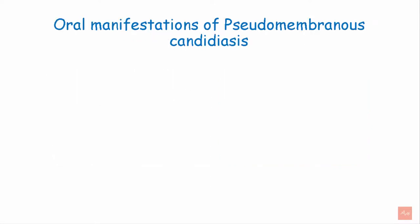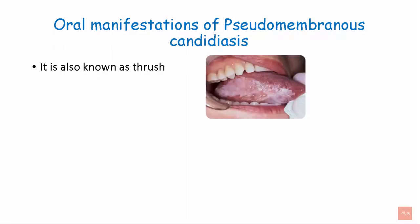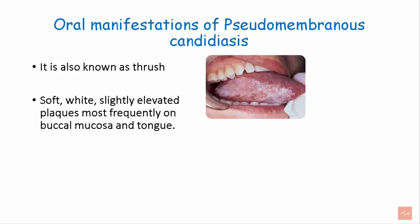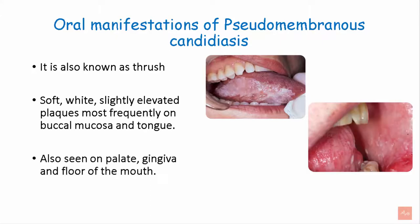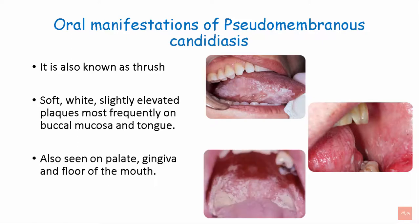Oral manifestations of pseudomembranous candidiasis: it is also known as oral thrush and this is the most common type of candidiasis. It characteristically has soft, white, slightly elevated plaques, mostly on buccal mucosa and the tongue, also seen on the palate, gingiva, and the floor of the mouth.